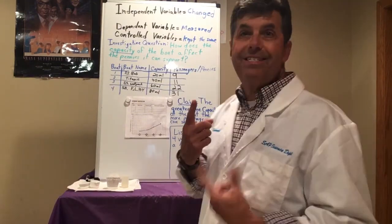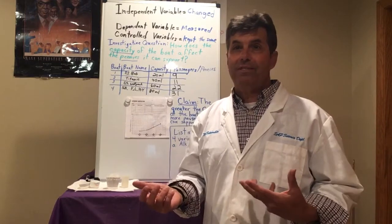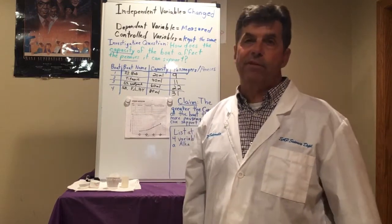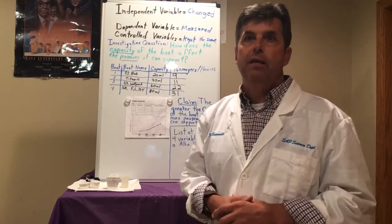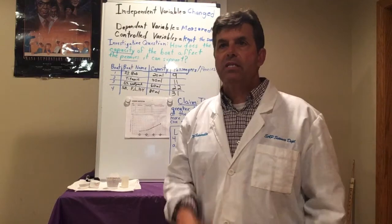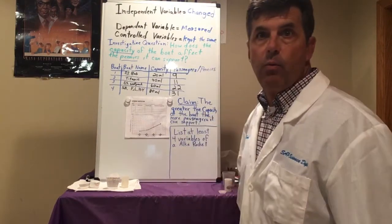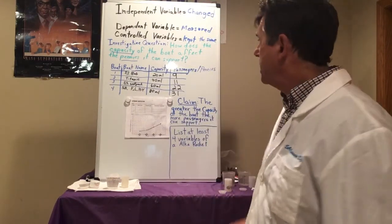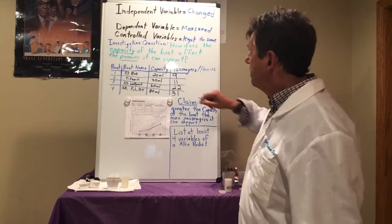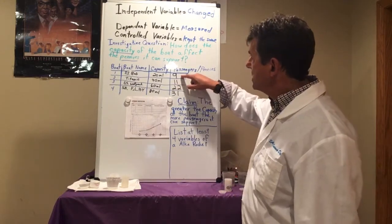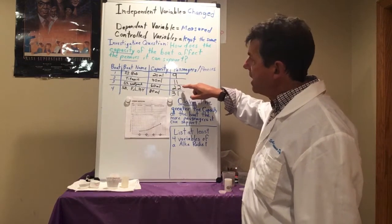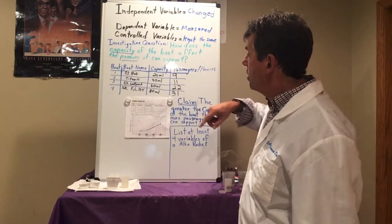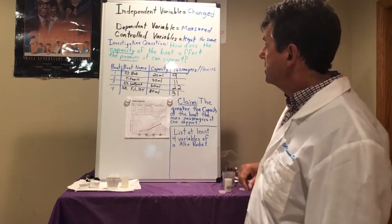We tested each boat one time. Did we say that was the best way to do it? No, we did it for time's sake. So we tested each one once, and we found out that the smallest one held 9 pennies, the next one was 11, the next one was 22 pennies, and then 31 pennies.